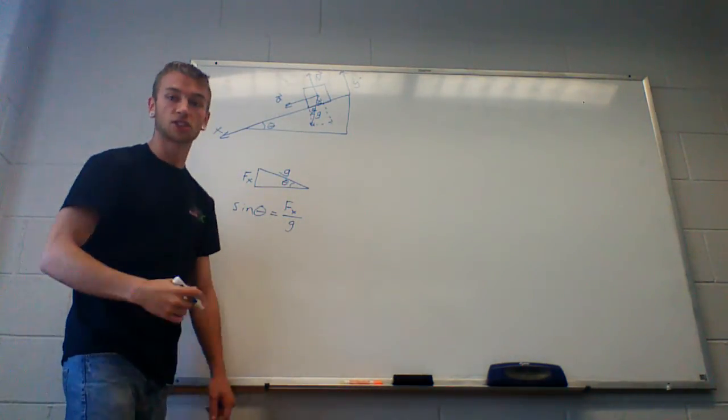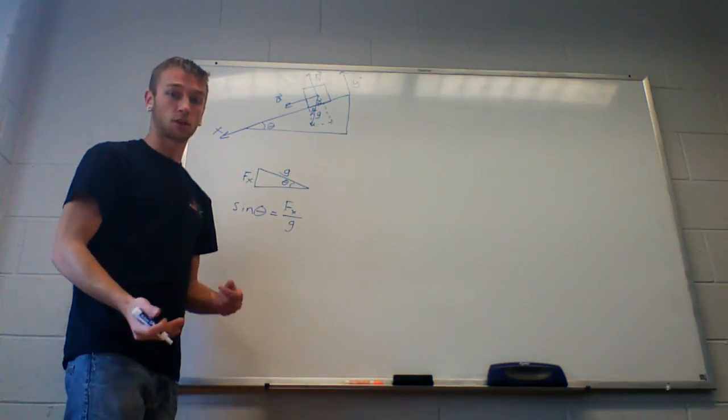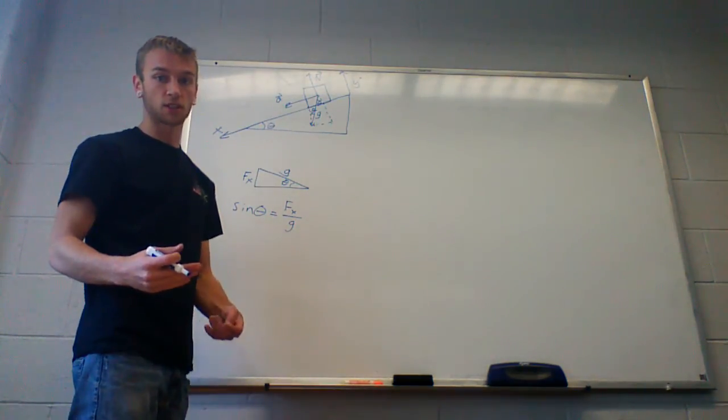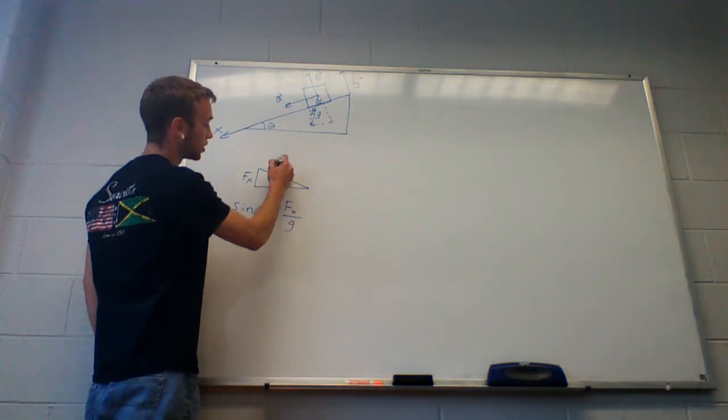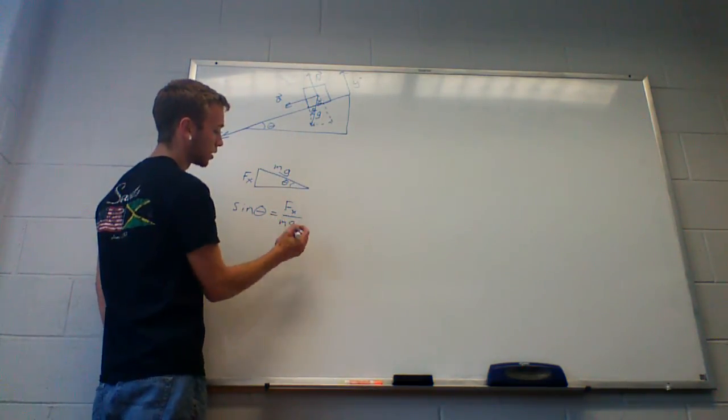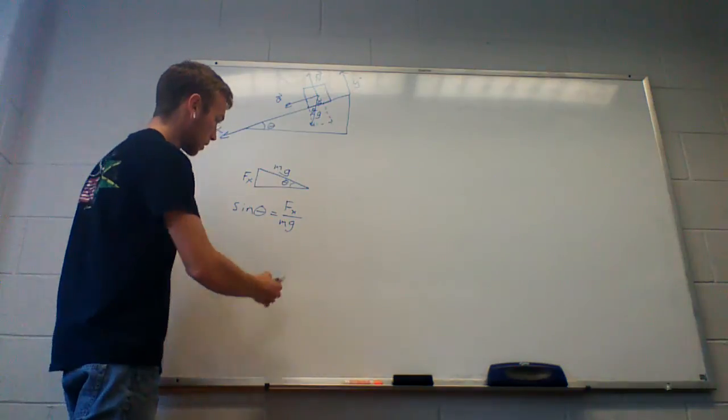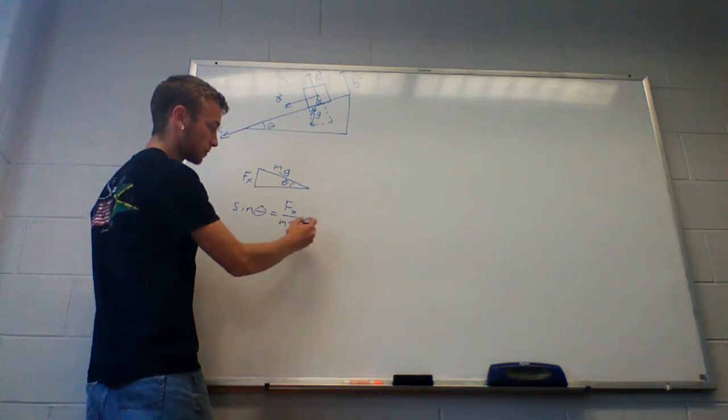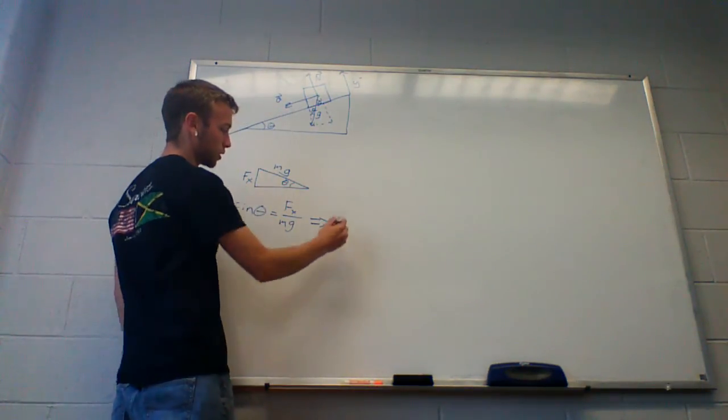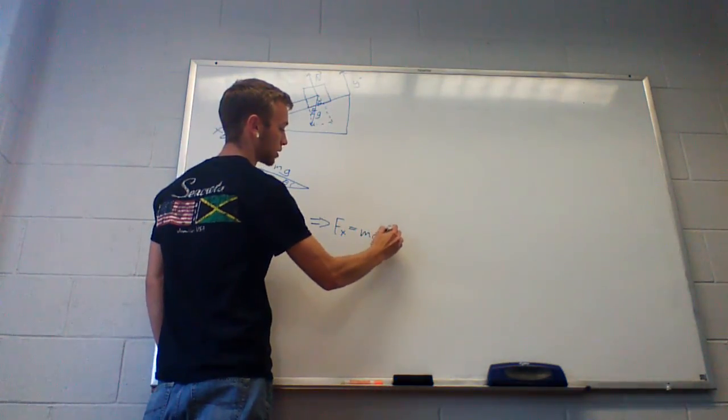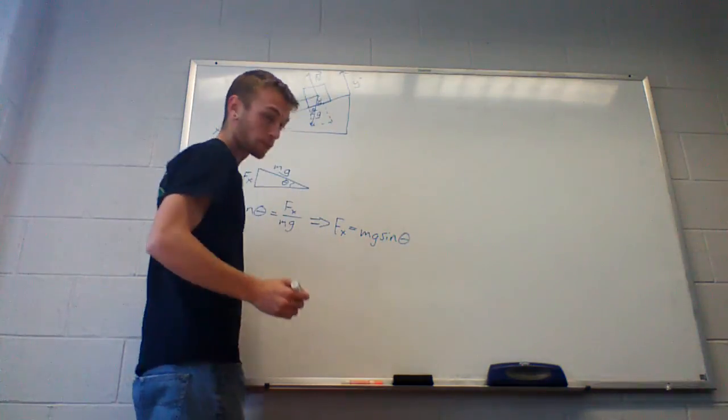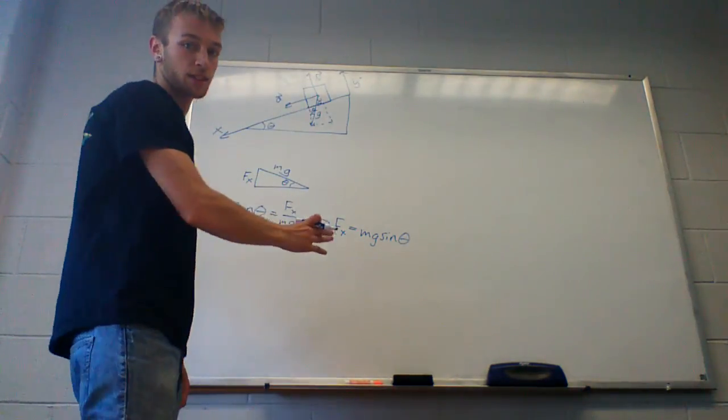What do we have? We have sine theta equals opposite fx over hypotenuse g. And it's actually not just g, it's mg, because we're talking about forces, and g's our acceleration, m's our mass, put them together, it's a force. If I rearrange this equation, you're going to get f of x equals mg sine theta.